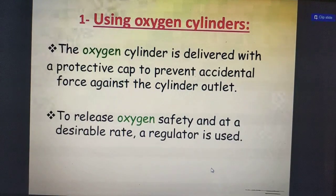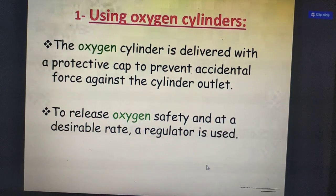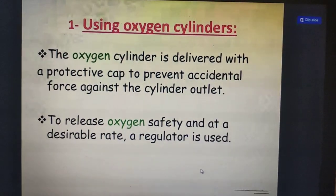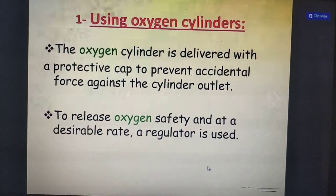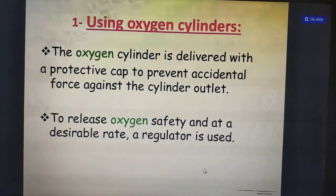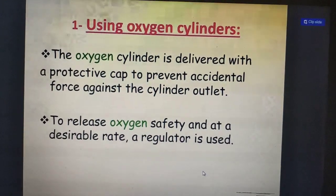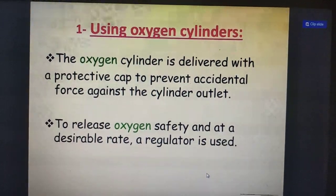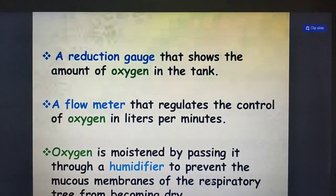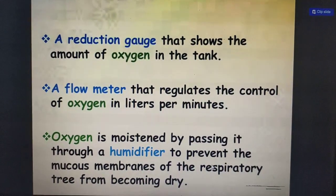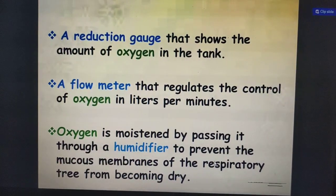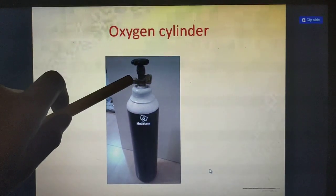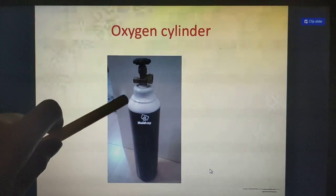The oxygen cylinder is delivered with a protective cap to prevent accidental force against the cylinder outlet. To release oxygen safely at a desirable rate, a regulator is used to control the flow. Here we are also fixing a humidifier to the oxygen cylinder.